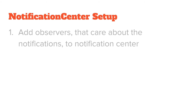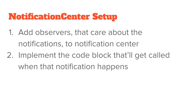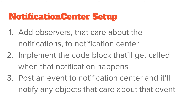How do we set this up? First, we add the observers that care about the notifications to the Notification Center — those observers will either add themselves or somebody else will add them. They're observing the notifications being posted. Second, we implement the code block that gets called when that notification happens. Third, post an event to the Notification Center from any object, and it'll notify any objects that care about that event.